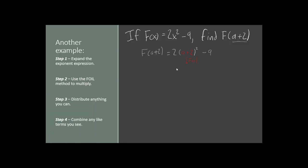So let's go ahead and expand this expression here for step 1. We'll have 2 times (a + 2) times (a + 2) minus 9. Now let us FOIL these two parentheses here in step 2.